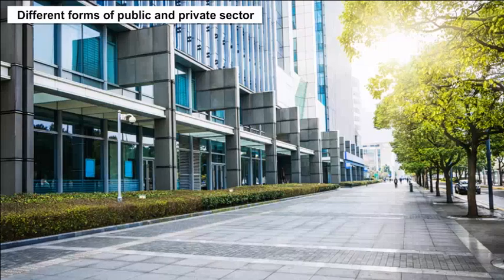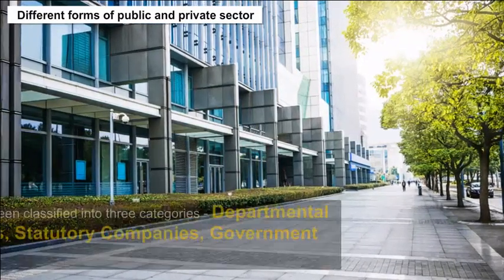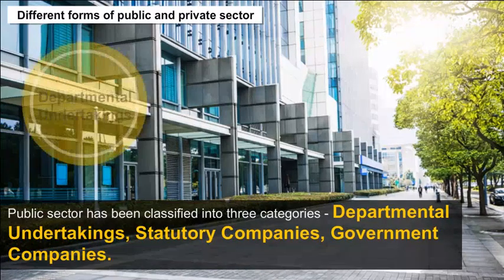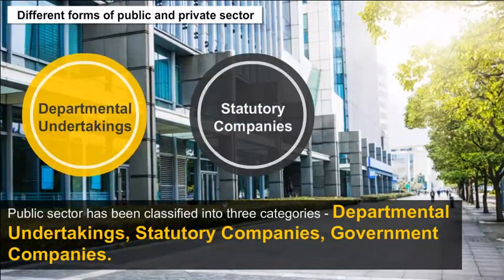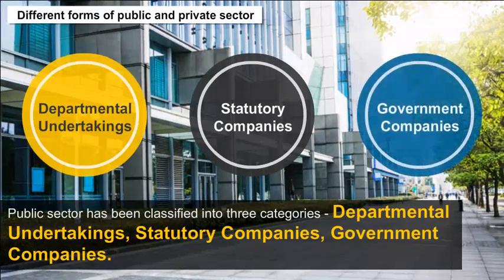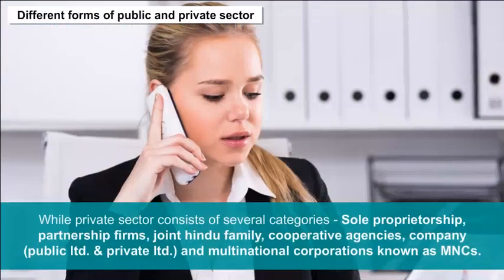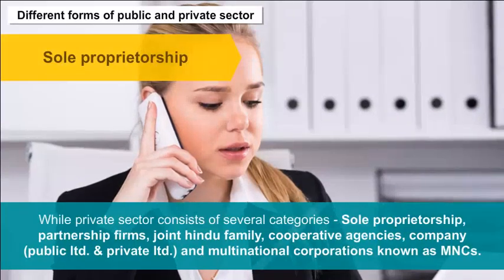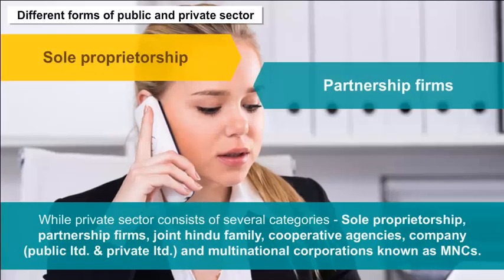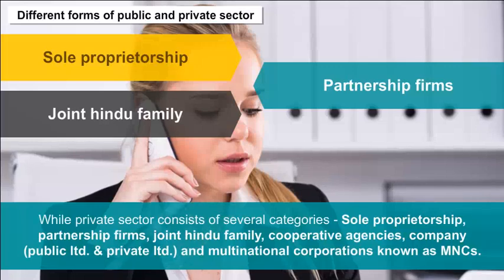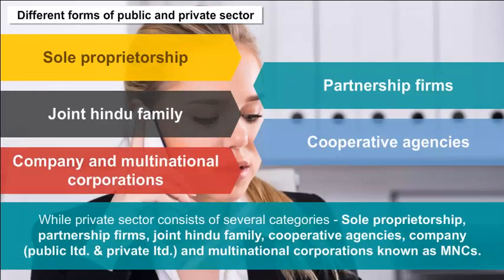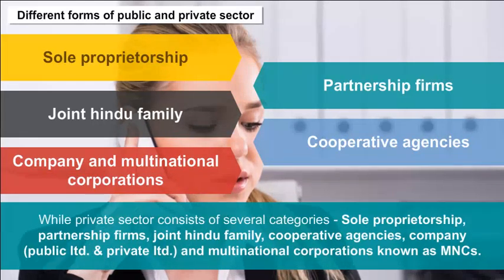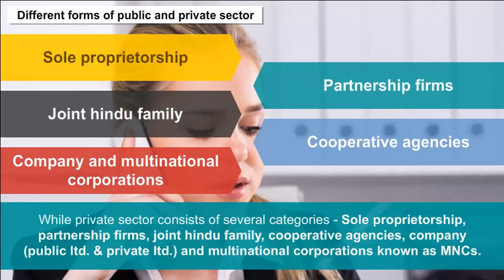Different forms of public and private sector. The public sector has been classified into three categories: departmental undertakings, statutory companies, and government companies. The private sector consists of several categories: sole proprietorship, partnership firms, joint Hindu family, cooperative agencies, companies (public limited and private limited), and multinational corporations known as MNCs.